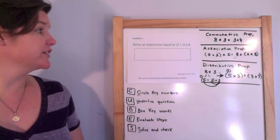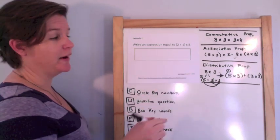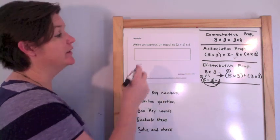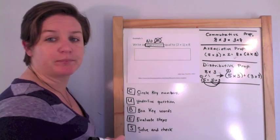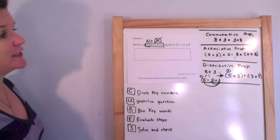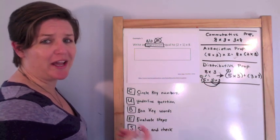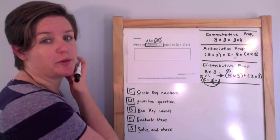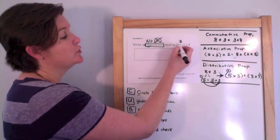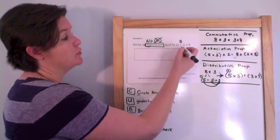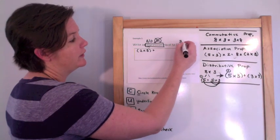So we have example one. It says, write an expression equal to 2 plus 1 times 8. Here's my equation editor — I only want to put the answer in here, so I'm just writing an expression. An expression means there is no equal sign. Here I'm seeing some characteristics of the distributive property, so I'm going to use the distributive property to write an expression. It looks like they've taken the factor 3 and broken it into 2 plus 1. So now I just need to distribute the rest: 2 times 8 plus 1 times 8.